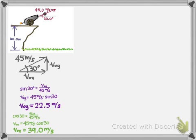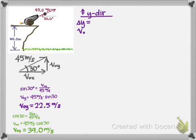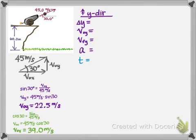Now that we have everything in x and y components — and the height is already in the y direction — let's list out all those variables. We'll start with the y direction, and it's important to define our positive direction. In this problem, the cannonball is going up and then coming down, so we'll go with the conventional: up is positive. We've got delta y, v₀y, v_final_y, acceleration, and time. Time is marked in blue because it is independent of direction.